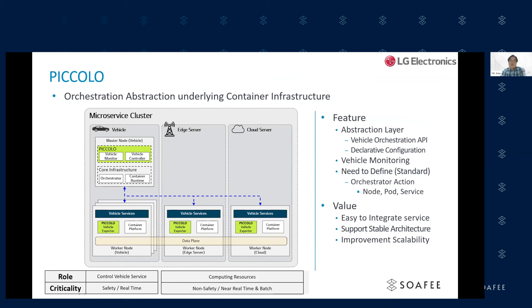This is Piccolo. Here we specify the Piccolo requirements. To achieve the SDV platform, there are various types of computing resources and service distributions. Piccolo defines an orchestration abstraction layer based on container infrastructure, providing vehicle orchestration APIs and declarative configuration. It also needs to monitor orchestration actions in terms of nodes, pods, and services. More specifically, it needs to define what kind of role is associated with each node, such as vehicle, edge, and cloud.